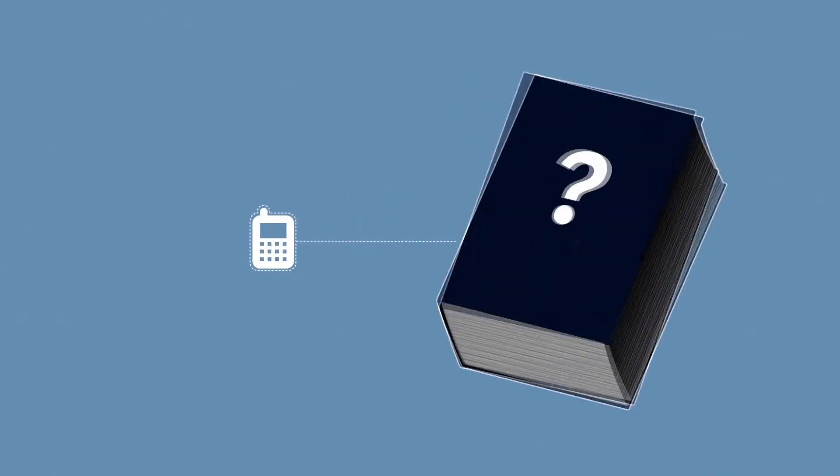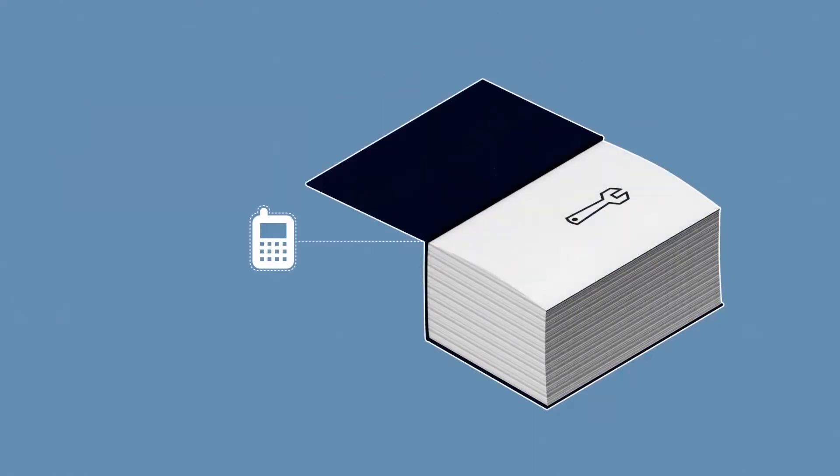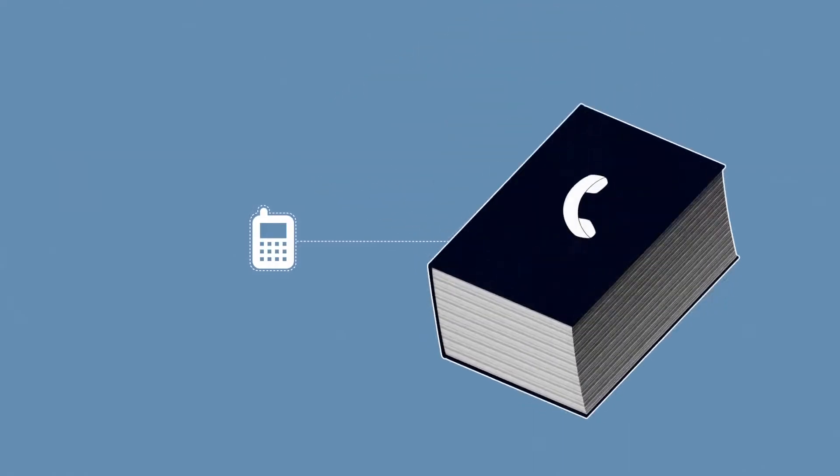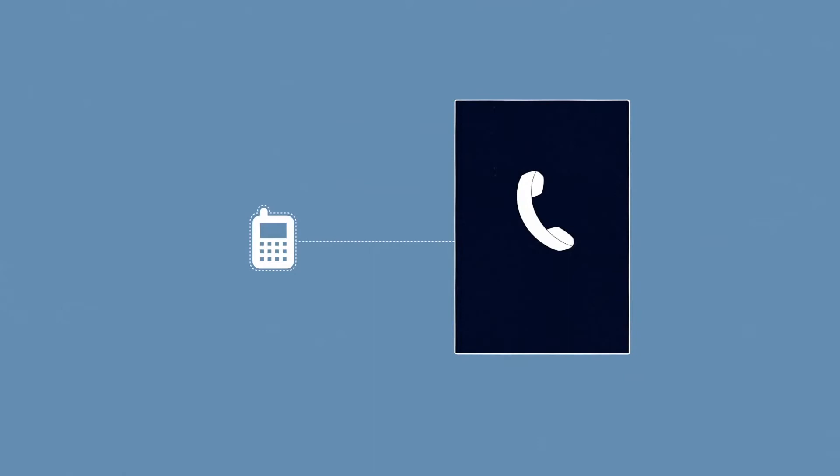Life has become simpler and more complicated at the same time. Today the operating instructions for your smartphone, for example, are almost as thick as your telephone directory once was. But now you don't need your telephone directory because you have your smartphone.